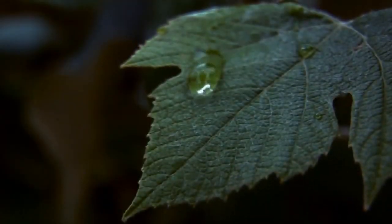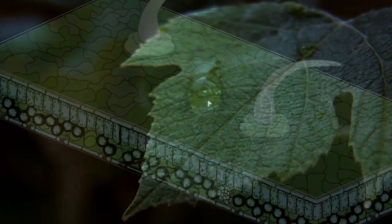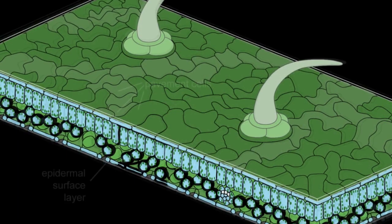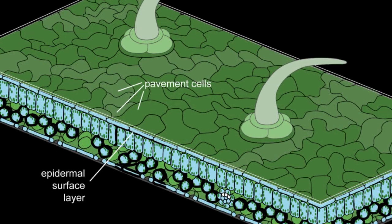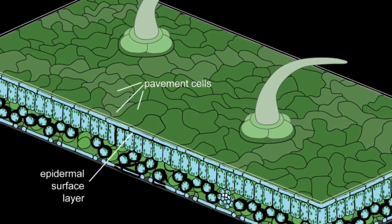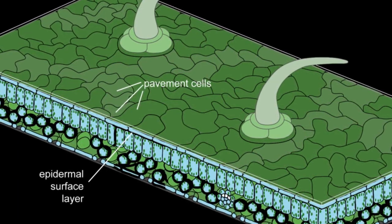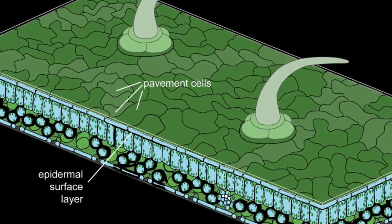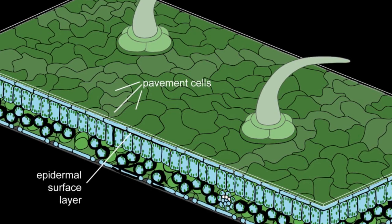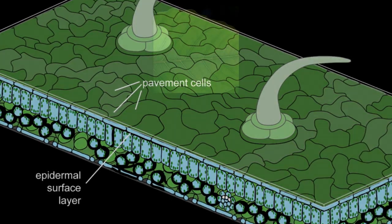Leaves are the fundamental basis for human survival on earth. They require an intricate pattern of interlocking cells, so-called pavement cells, on their epidermal surface layer to maintain structural integrity and tensile strength.